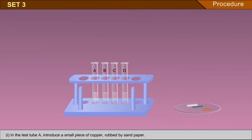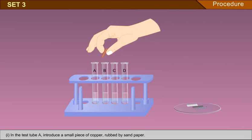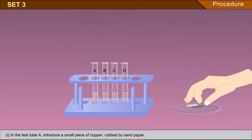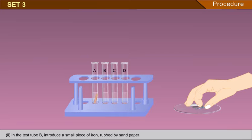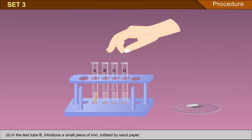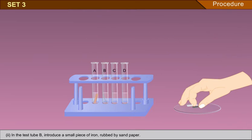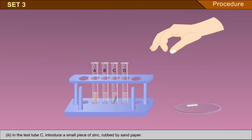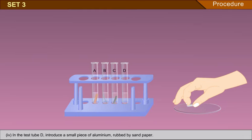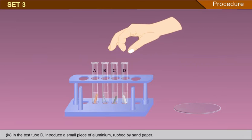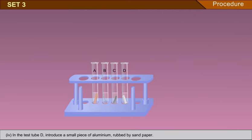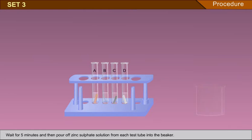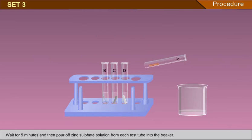In test tube A, introduce a small piece of copper rubbed by sandpaper. In test tube B, introduce a small piece of iron rubbed by sandpaper. In test tube C, introduce a small piece of zinc rubbed by sandpaper. In test tube D, introduce a small piece of aluminium rubbed by sandpaper. Wait for 5 minutes and then pour off zinc sulphate solution from each test tube into the beaker.